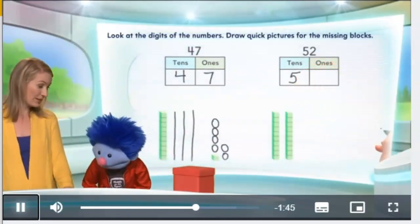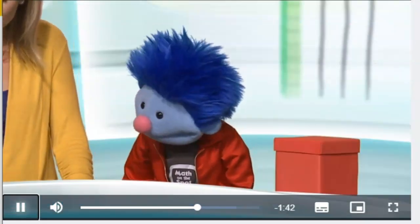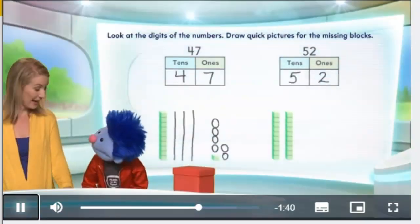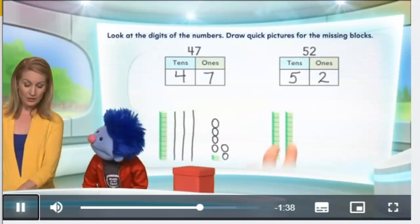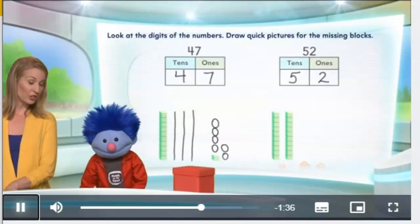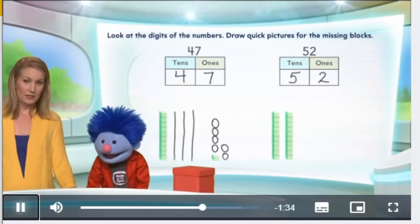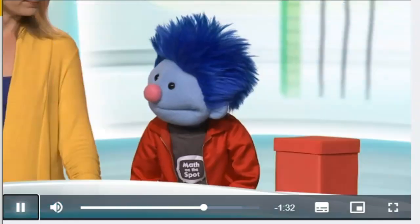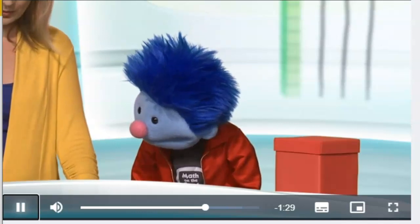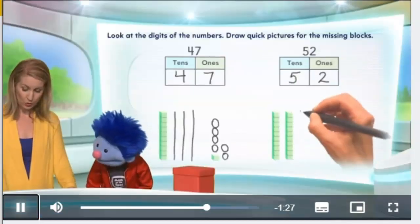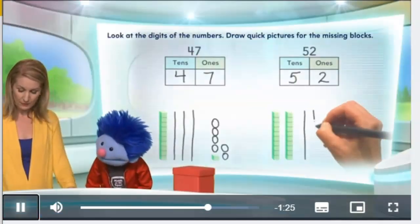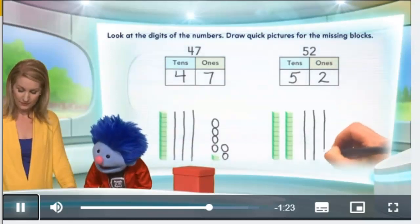And how many ones do we need? Two. That's right. Two ones. Fantastic. Now we have two tens. But we want to show five tens. So how many are we missing? Well, let's count them. So we have one, two, three, four, five. Five.